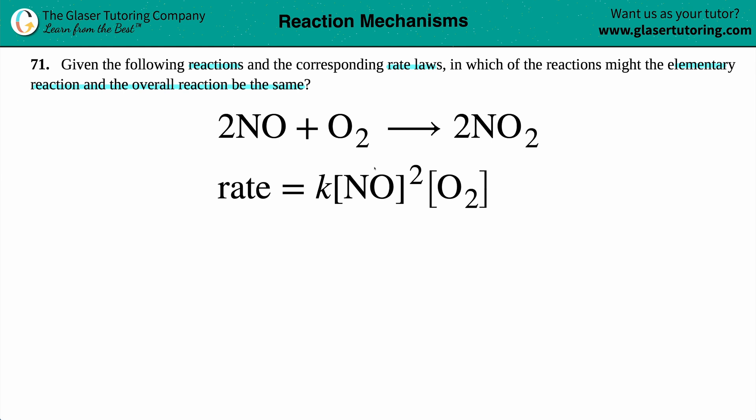Now the question here is asking if the elementary reaction, which we're going to state is this reaction, they only gave us one reaction, that's going to be an elementary reaction, can this elementary reaction be equal to the overall reaction? And if the one single equation that they give us is equal to the overall thing, that means that the rate law, which is abiding by the overall reaction, so a rate law is always going to give you information about everything that's going on overall.